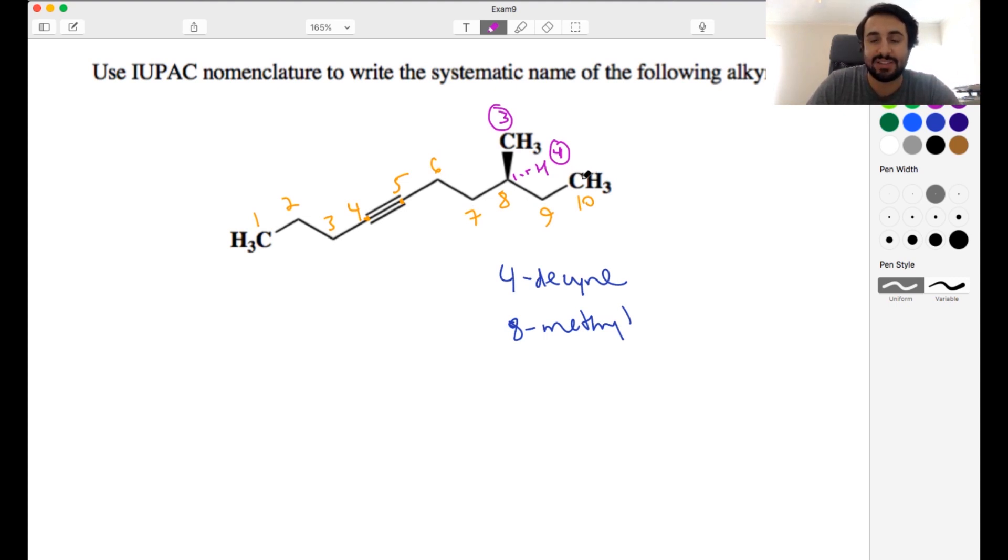And then over here, carbon is attached to hydrogen, hydrogen, hydrogen, hydrogen, hydrogen, carbon. So this is actually priority 1, and this is priority 2. We do have the lowest priority group already away from us. So let's just go 1, 2, 3 like that, and we know this is S.